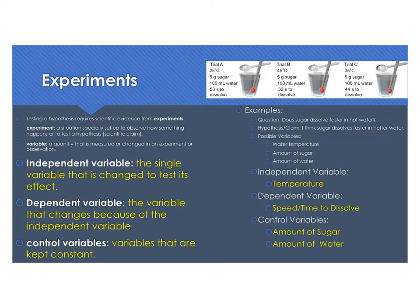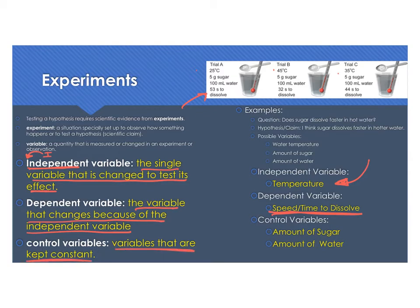Our experimental and control variables—we can now create some definitions for them. The independent variable is the single variable that is changed to test its effect. In other words, it's the thing that I, the scientist, change. I always remember the independent variable is the thing that I change. The dependent variable is the variable that changes because of the independent variable. In this particular case, the thing that we were changing is the temperature of the water in our cup. What we were expecting to change because of that was the speed or the time to dissolve. Last but not least, we have our control variables. Those are the things that are kept constant. That is the amount of sugar and the amount of water.